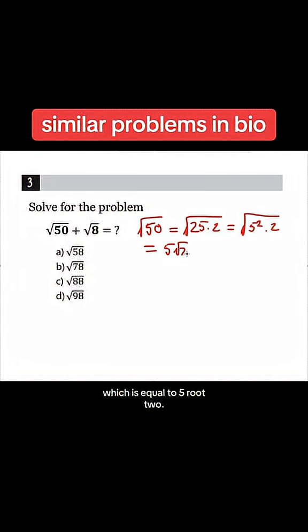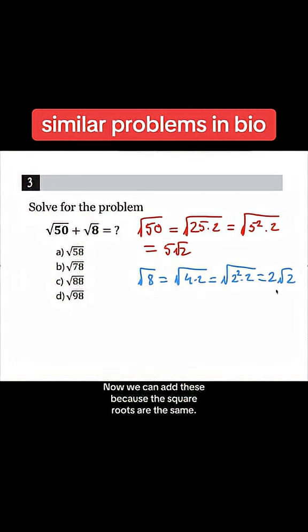Now we can write √8 as √(4 × 2), which we know is √(2² × 2), which is equal to 2√2. Now we can add these because the √2s are the same, so we have 5 + 2 = 7√2.